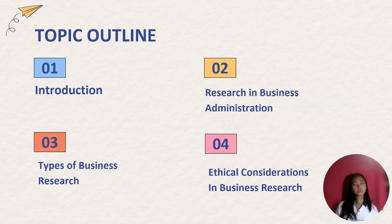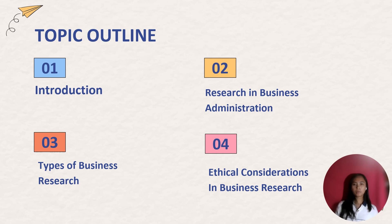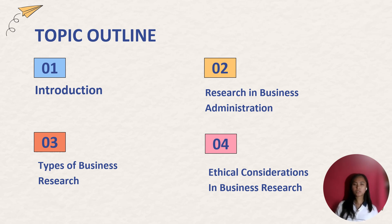This will be the topic outline for today. First, we will be introducing what the topic will be all about. Second, we will also talk about research in business administration. Third, we will be discussing the different types of business research. And lastly, we will also talk about the ethical considerations that exist in business research.